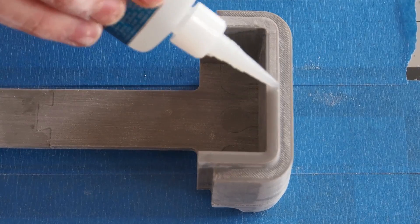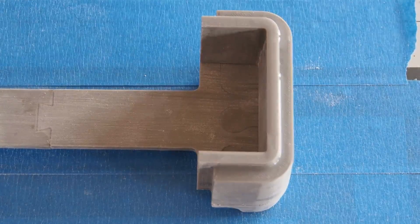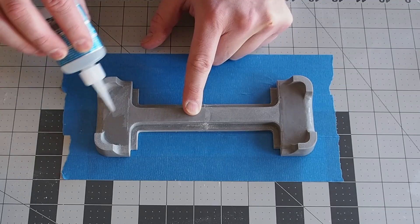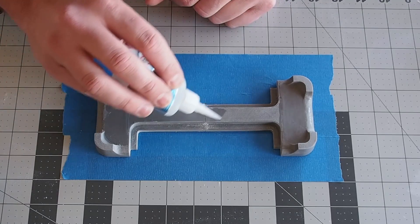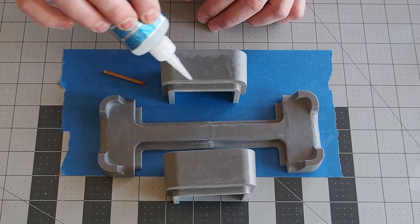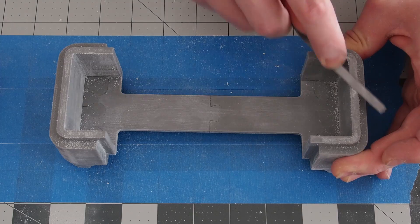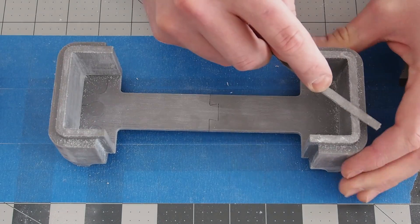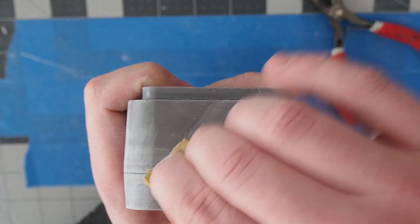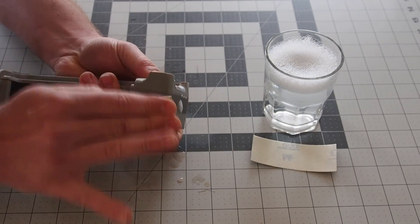Next I'll coat all of the pieces with super thin CA glue. This will fill in some of the texture left by the 3D printer and is much nicer to sand than PLA plastic. For the first pass I will use a file, then 220 grit, and then I will wet sand with 600 grit sandpaper.